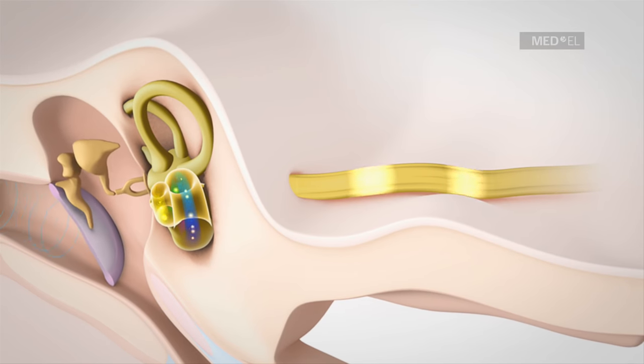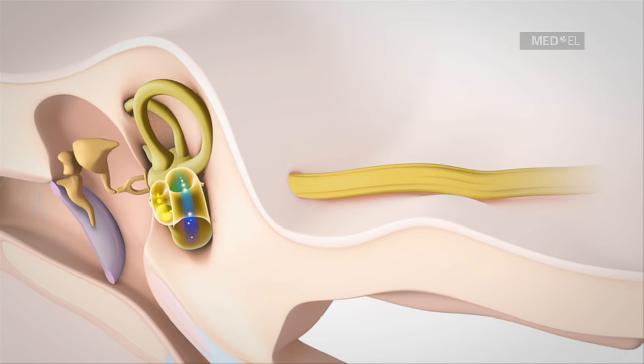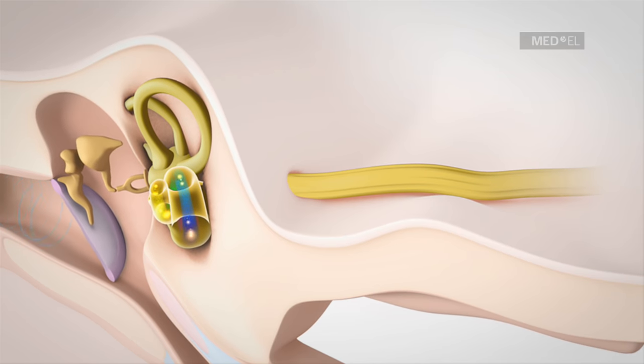The auditory cortex of the brain interprets this information as sound, for example as music or speech.